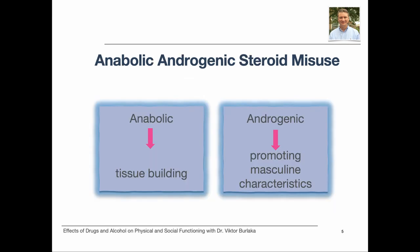Anabolic steroids differ considerably from corticosteroid medications that are often used for treating inflammation. Anabolic androgenic steroids are synthetic compounds related to or mimicking testosterone, a hormone that naturally occurs in the bodies of both men and women. Anabolic refers to tissue building, and androgenic means promoting masculine characteristics. Medically, anabolic steroids may be used to address delayed puberty and loss of muscle mass with certain diseases.